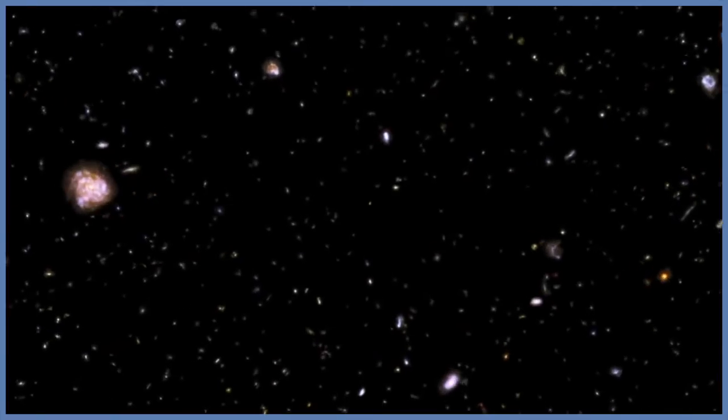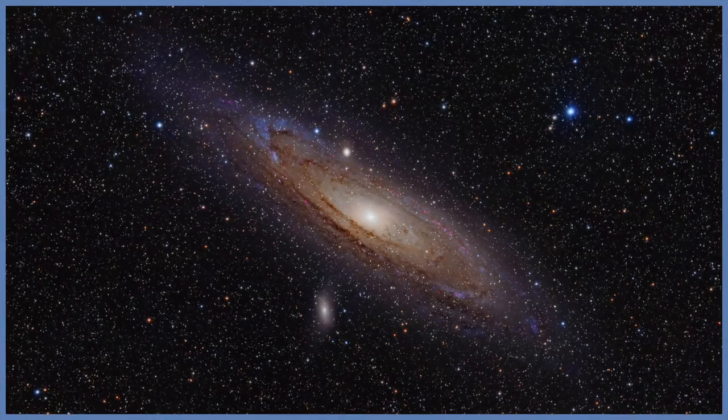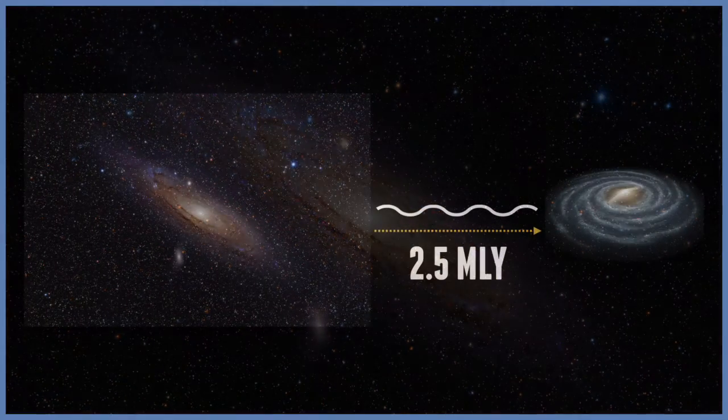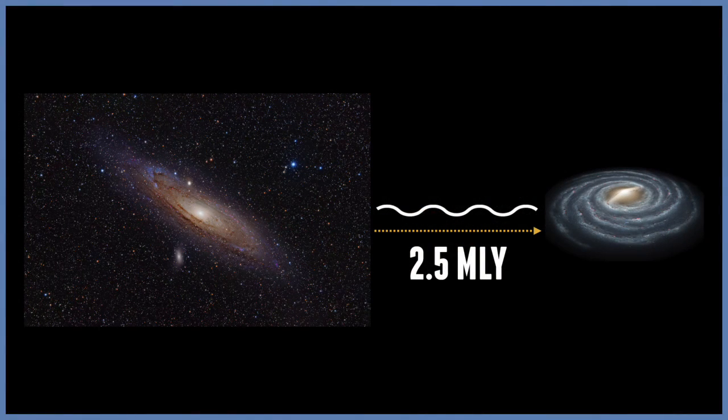The nearest large galaxy to the Milky Way is the Andromeda Galaxy, 2.5 million light years from Earth. The light left this object more than 2 million years ago, at a time when our species was just beginning its evolutionary process and gaining a foothold on our planet.